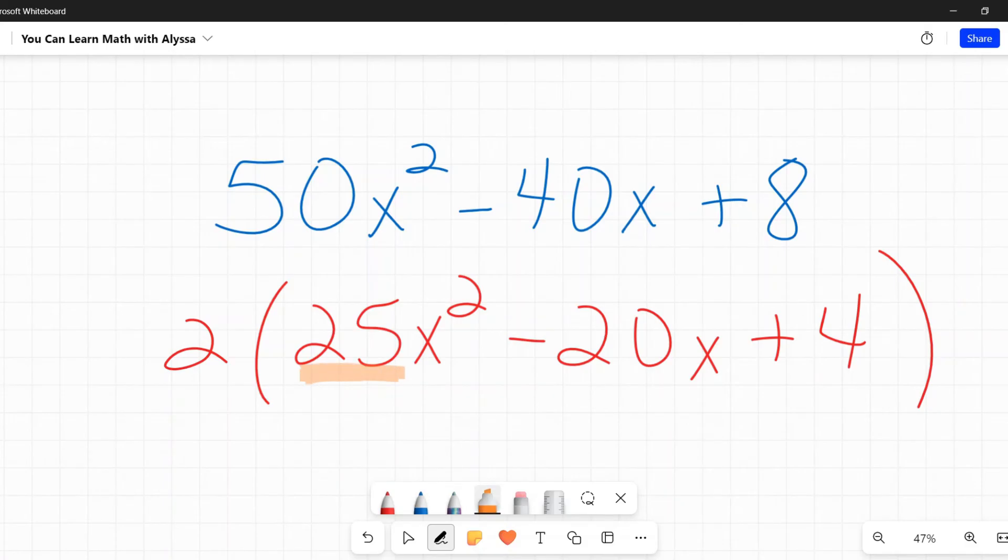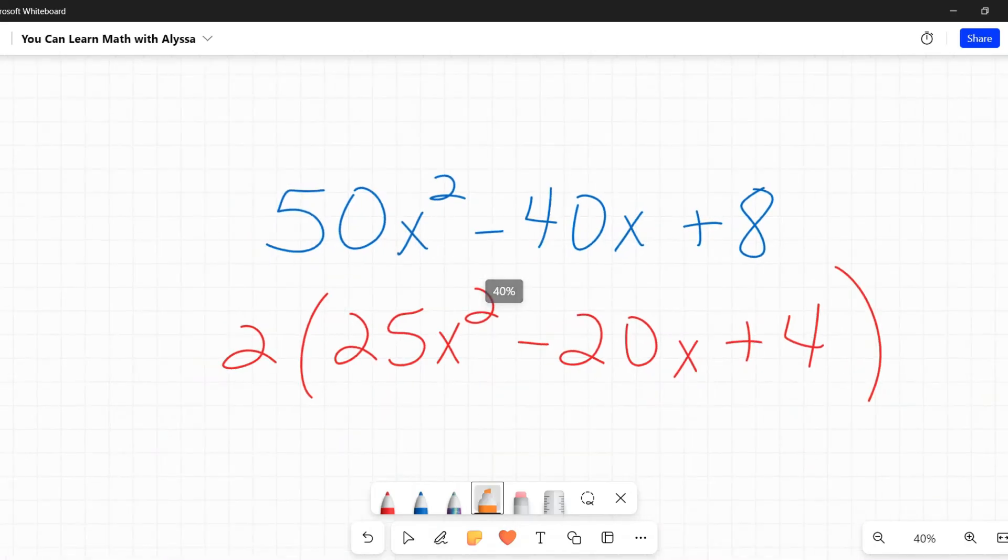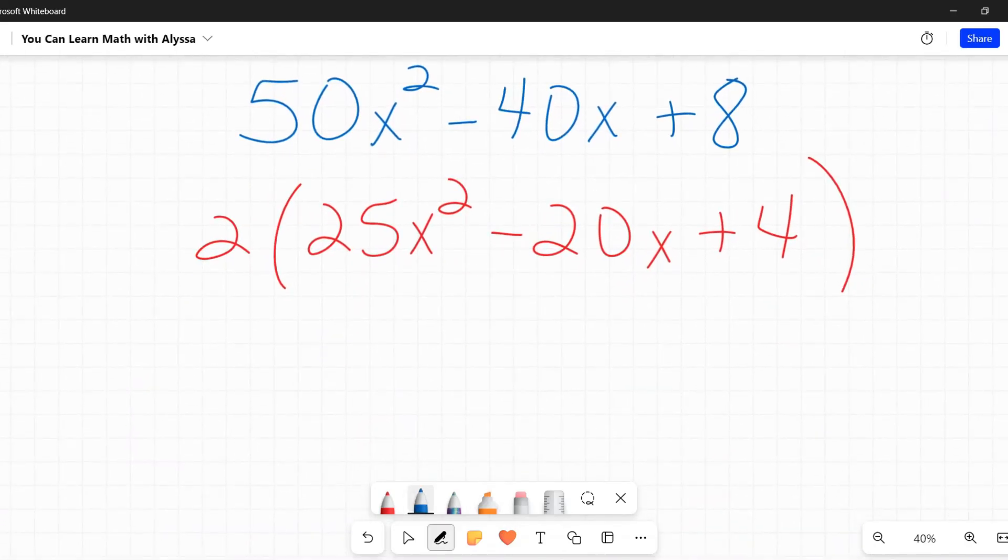I get 2 times 25x squared minus 20x plus 4. Is there anything further that I can factor out? Yes, I did. Because this one, 25, its factors are 1, 5, and 25, and 5 and 25 do not go into 20 or 4. So 2 is the biggest. And looky here. I've got 25x squared, and 4 is a perfect square. So now we've got those squares and we can use our pattern.